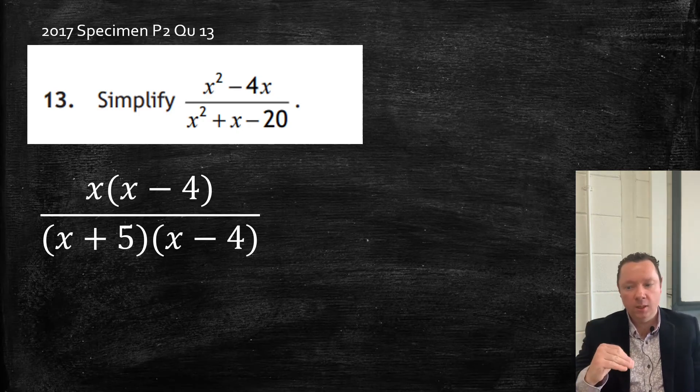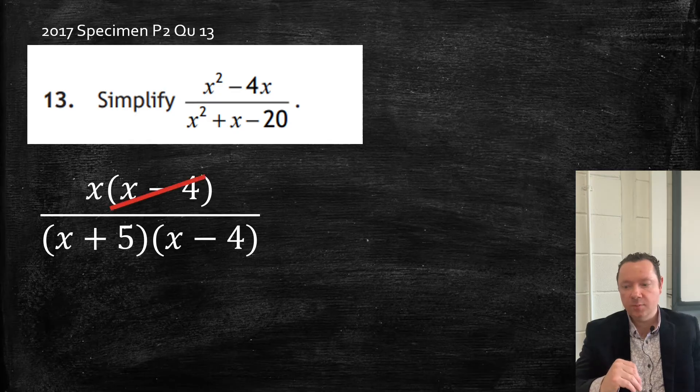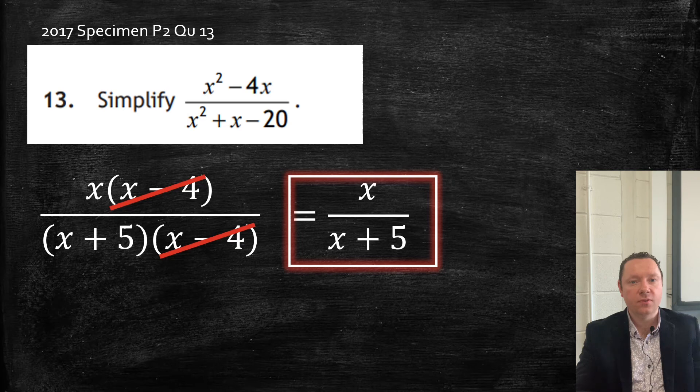Remember, you're looking for the same top and bottom. (x - 4), (x - 4), leaving just x/(x + 5).